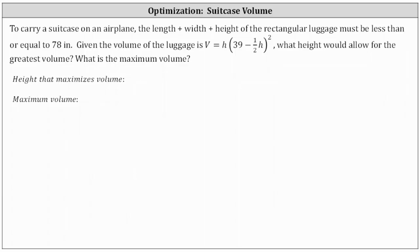To carry a suitcase on an airplane, the length plus the width plus the height of the rectangular luggage must be less than or equal to 78 inches. Given the volume of the luggage is v equals h times the square of (39 minus one half h), what height would allow for the greatest volume and what is the maximum volume?